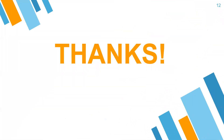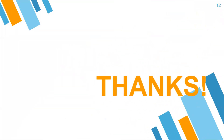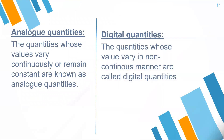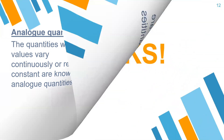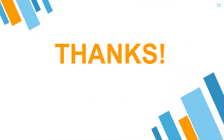What are analog and digital quantities? The quantities whose values vary continuously or remain constant are known as analog quantities. The quantities whose values vary in a non-continuous manner are called digital quantities. I hope you understood analog and digital electronics very well. Thank you, students.